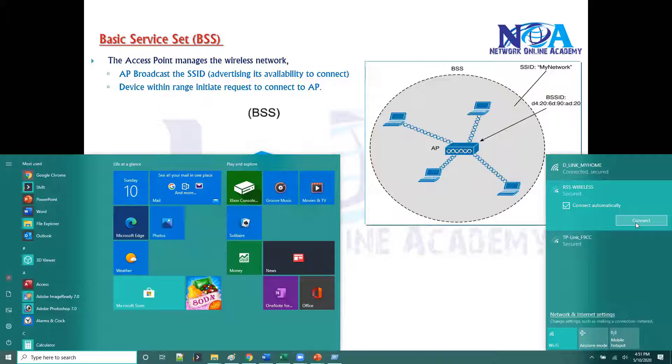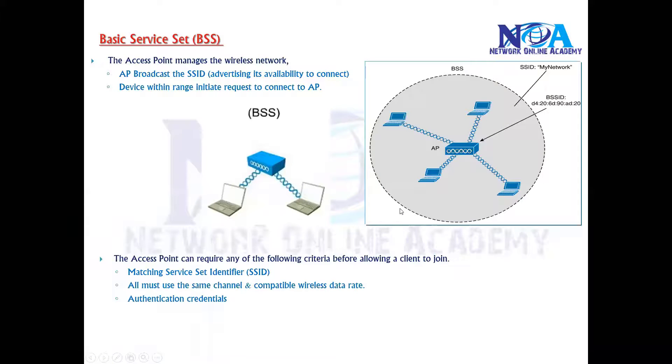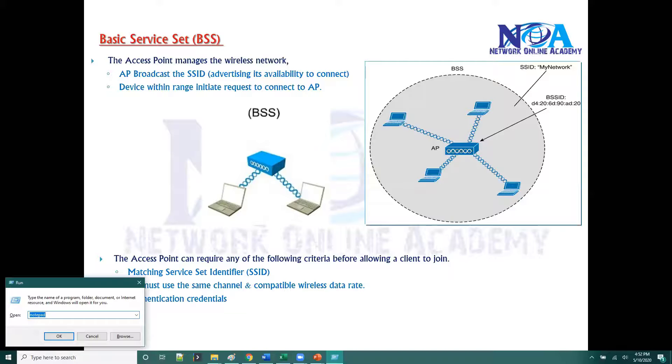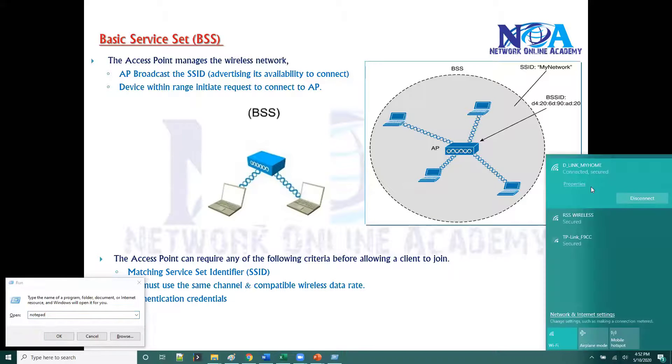Again, the access point requires the following criteria to join. We need to make sure that we match the SSID. Of course, you can detect the SSID automatically on the client side, but if you are doing some manual connection, then you need to know the SSID and that SSID has to match.